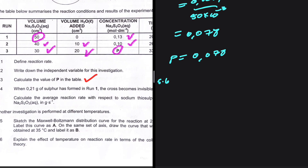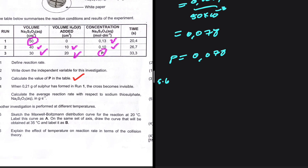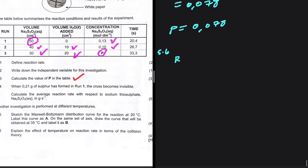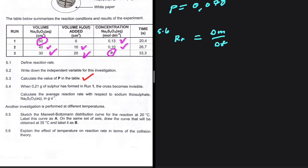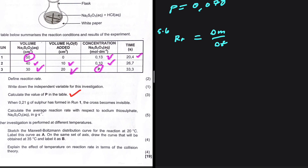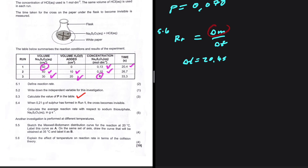5.4: when 0.21 grams of sulfur has formed in run one the cross becomes invisible. Calculate the average reaction rate with respect to sodium thiosulfate in grams per second. That's the change in mass divided by the change in time. For run one, the time is 20.4 seconds, so Δt = 20.4 s.